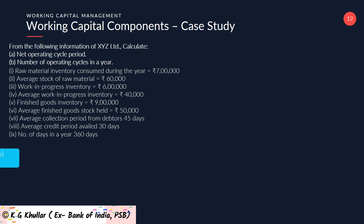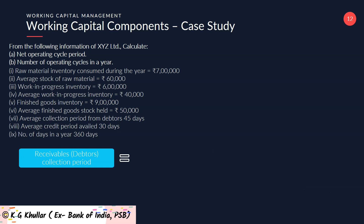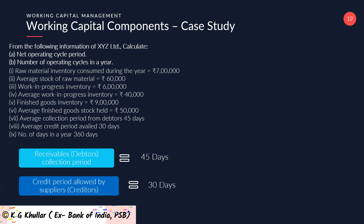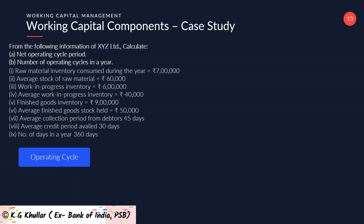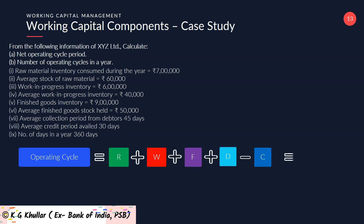Receivables or debtors collection period D is given in the data as 45 days. The credit period allowed by creditors C is given as 30 days. Putting all these values in the equation of net operating cycle — R + W + F + D − C — that is 31 + 24 + 20 + 45 − 30, which gives 90 days. So the net operating cycle of the firm is 90 days.